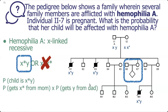The probability that the child is X star Y means the probability the child gets X with the mutation from mom, times the probability the child gets Y from dad. Let's break this up and do mom's side and then dad's side.